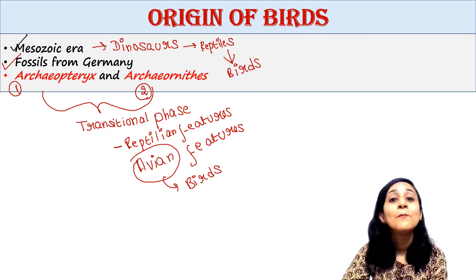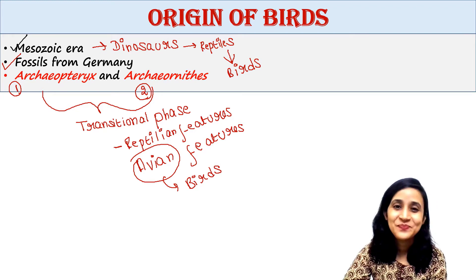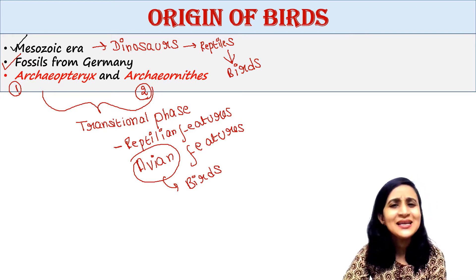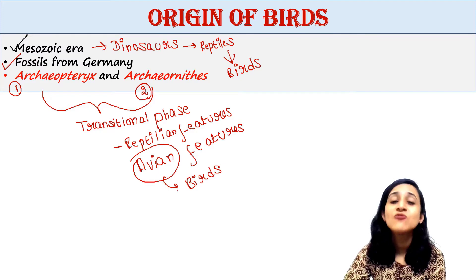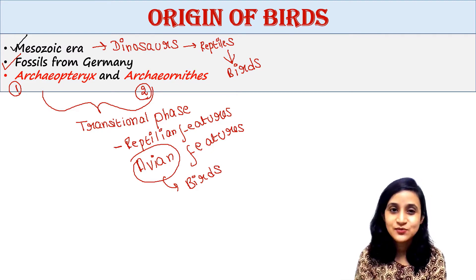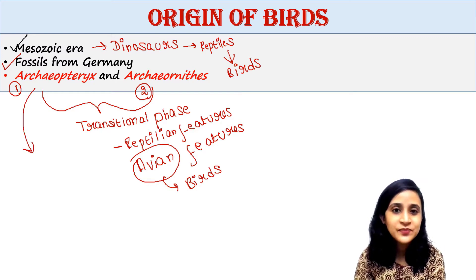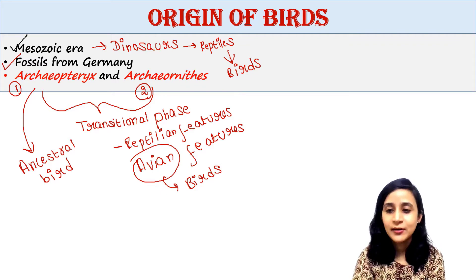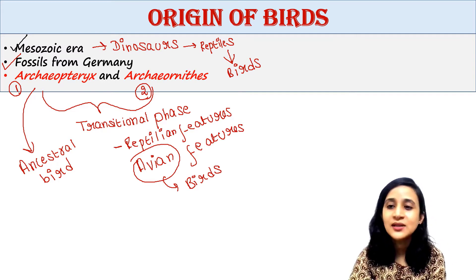From that it was concluded that birds originated from reptiles. Now there are many theories regarding the origin of the ancestral bird, which was believed to have evolved from Archaeopteryx. We will try to understand some of these theories one by one.